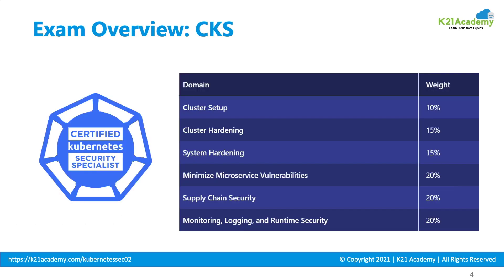With respect to Certified Kubernetes Security Specialist, these are the 6 areas in which your knowledge will be tested. You should know about Cluster Setup, Cluster Hardening — which includes how to give role-based access control to minimize exposure — system hardening to reduce attack surface, minimizing microservice vulnerability, securing image and minimizing image footprint with supply chain security, and lastly monitoring, logging, and runtime security.